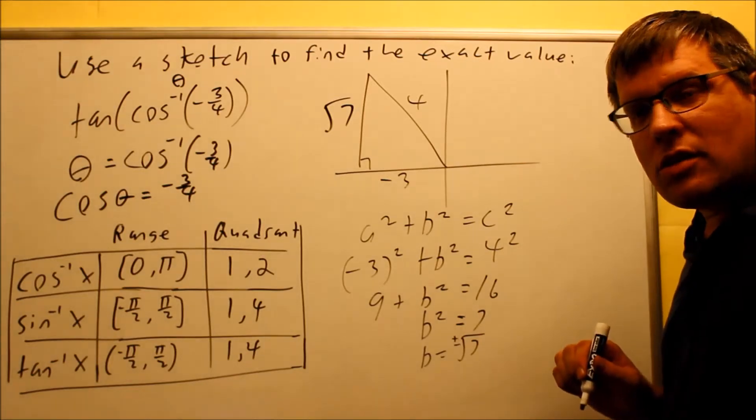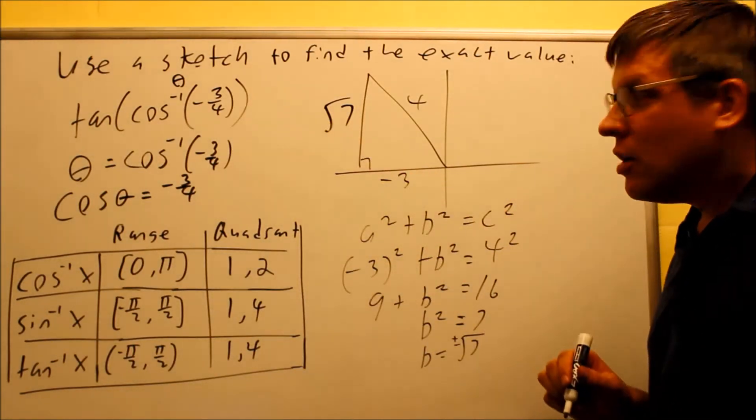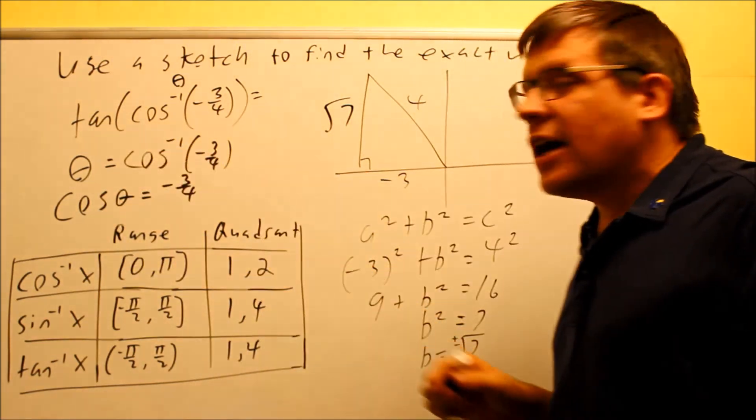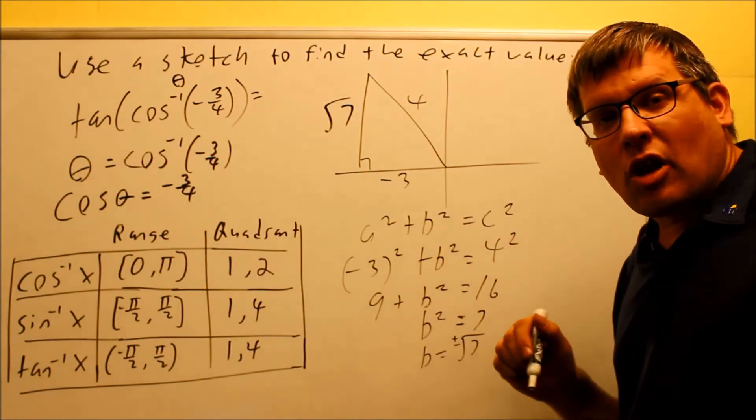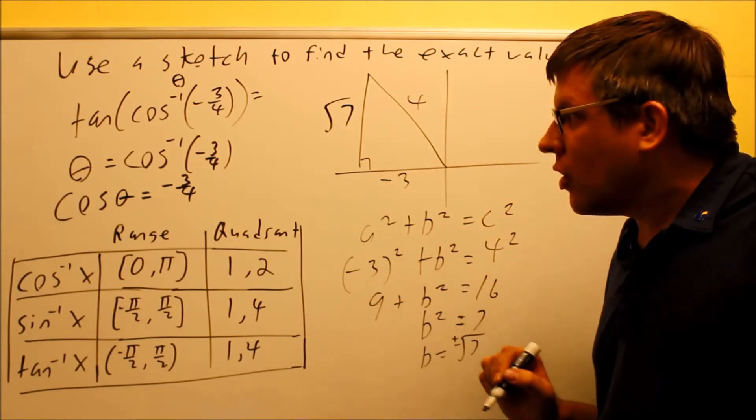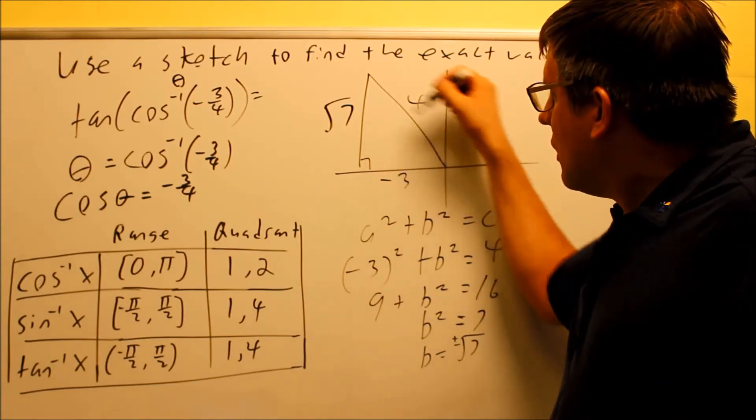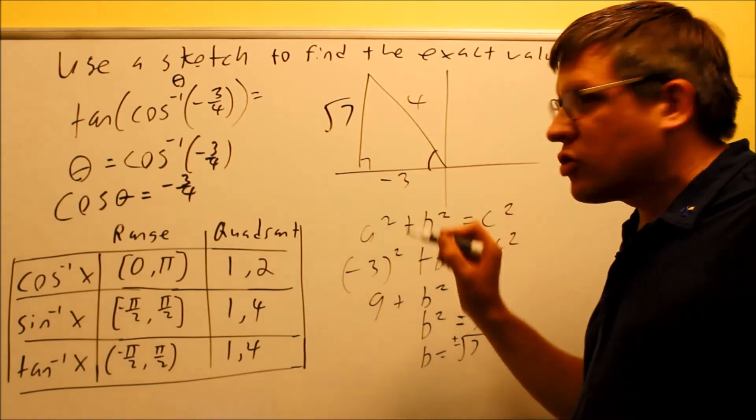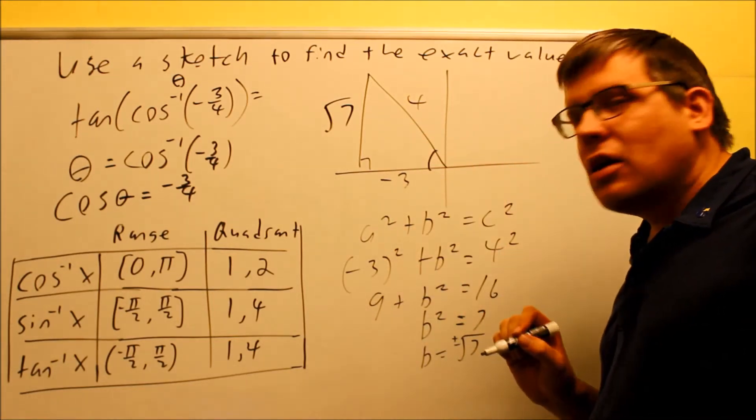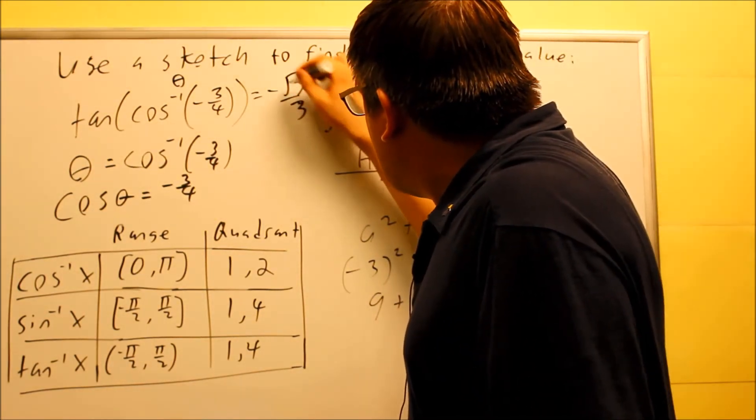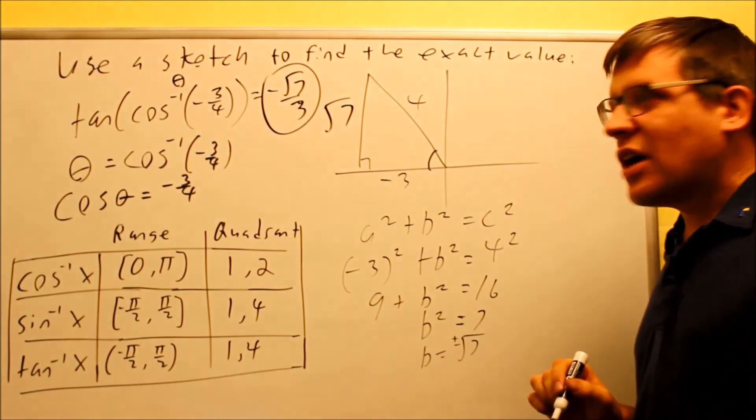The triangle is now complete. I'm ready to get my answer based on this. So right here, on the outside is a tangent. The one on the outside tells me the answer I'm going to grab from the triangle itself. So from tangent, tangent is opposite. The angle itself would be measured here from the x-axis. Opposite would be square root of seven. The adjacent is going to be negative three. So my answer is going to be negative square root of seven over three.